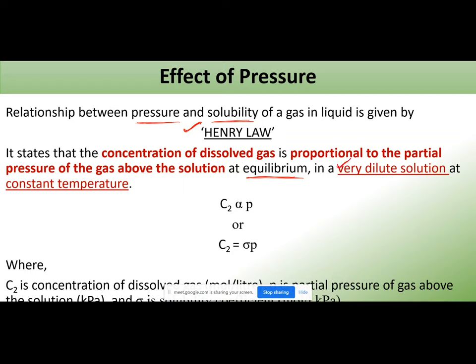Mathematically: C2 is directly proportional to P, where C2 is the concentration of the dissolved gas in mol/L and P is the partial pressure of the gas above the solution in kilopascals. Removing the proportionality sign, we add a constant sigma, which is the solubility constant.